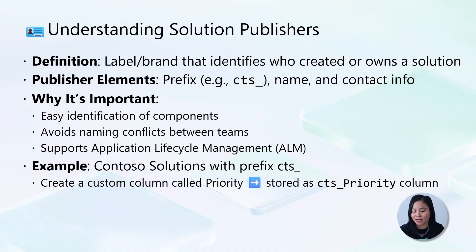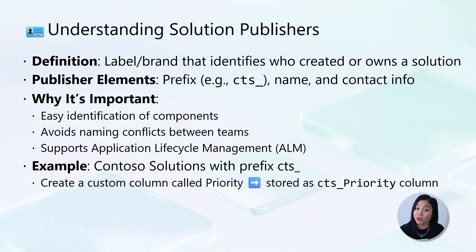For example, you have a Contoso solutions publisher with the prefix CTS underscore. And when you create a new column called priority, it becomes CTS_priority. This makes a column instantly identifiable across any environment.